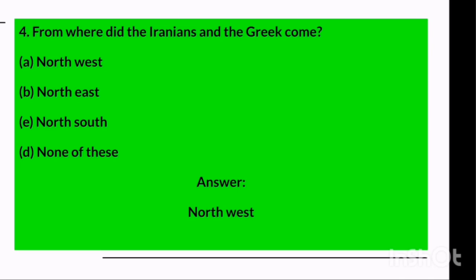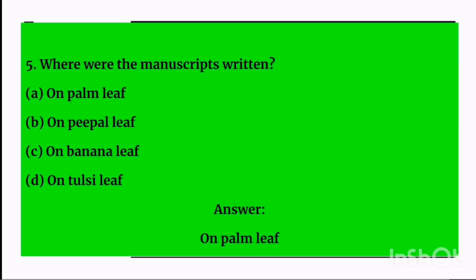Question four: From where did the Iranians and the Greeks come? Options are northwest, northeast, north, south, or none of these. The answer is northwest — the Iranians and the Greeks came from the northwest.